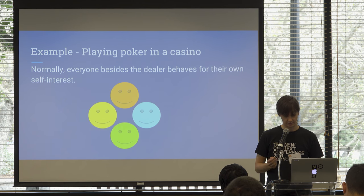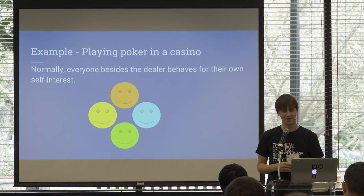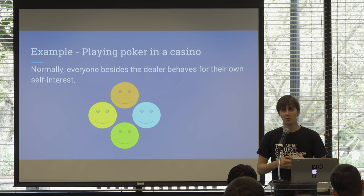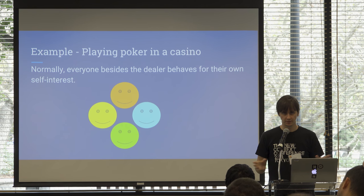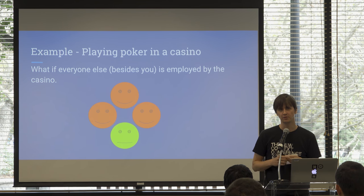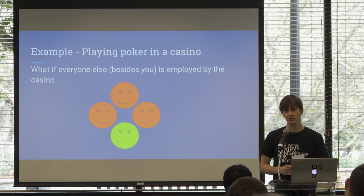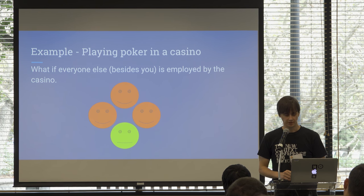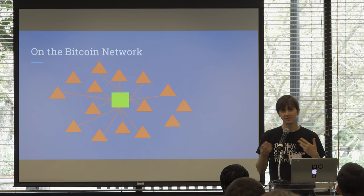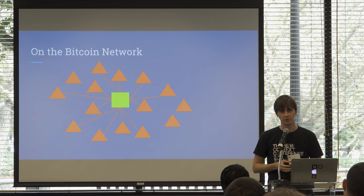Sybil attacks — I'll explain that now. Another casino example: we're playing poker. Everyone playing wants to win for themselves; no one is cooperating. But what if everyone except you is hired by the casino, and they're all cooperating in subtle ways to make you lose? On the Bitcoin network, when your node is getting new data and assuming it's correct, in a Sybil attack scenario you might be connected to nodes that are all cooperating to fool you in various ways.